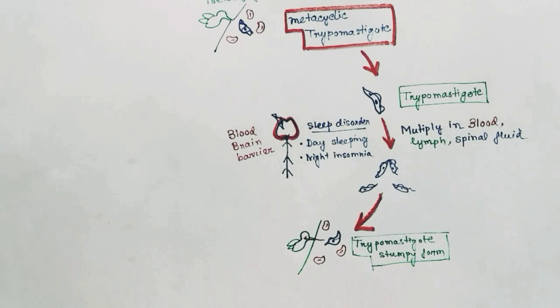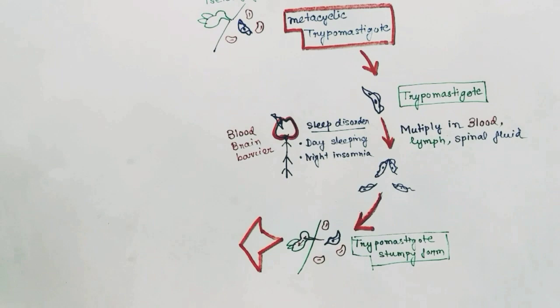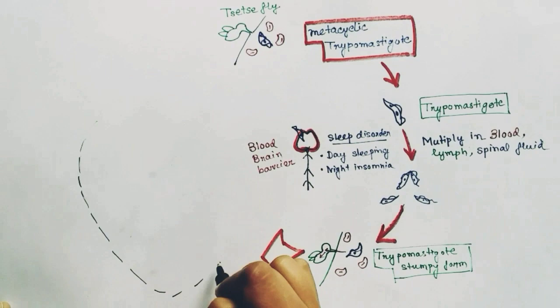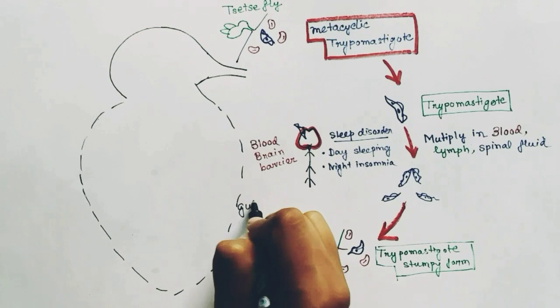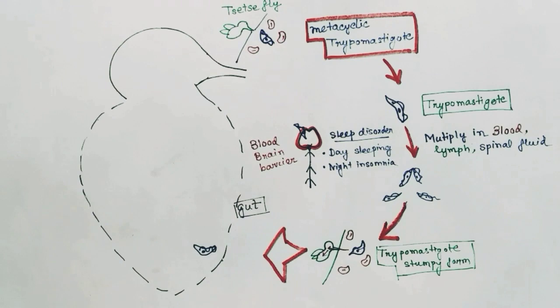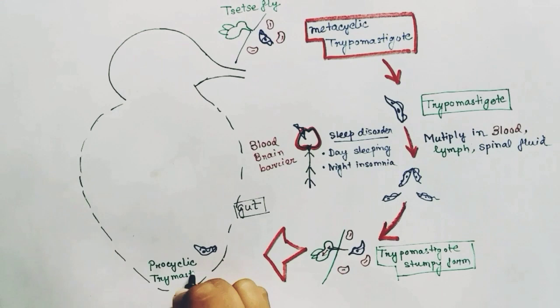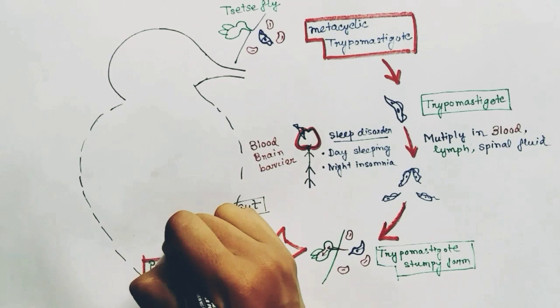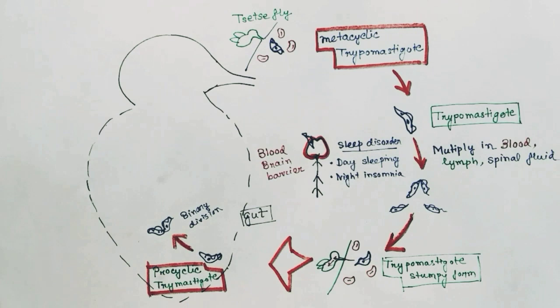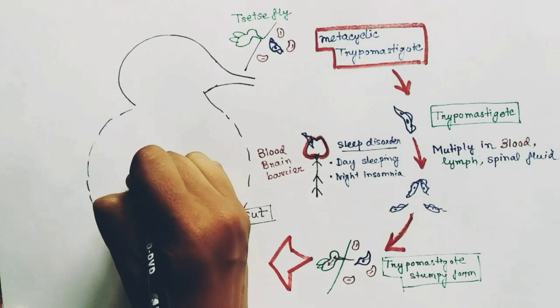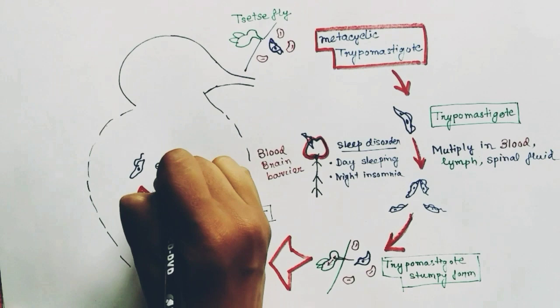When another tsetse fly sucks the blood of an infected human or vertebrate, it ingests the trypomastigotes into its gut. Inside the fly gut, the trypomastigote transforms into the procyclic trypomastigote, which then undergoes binary division, multiplying into many procyclic trypomastigotes.